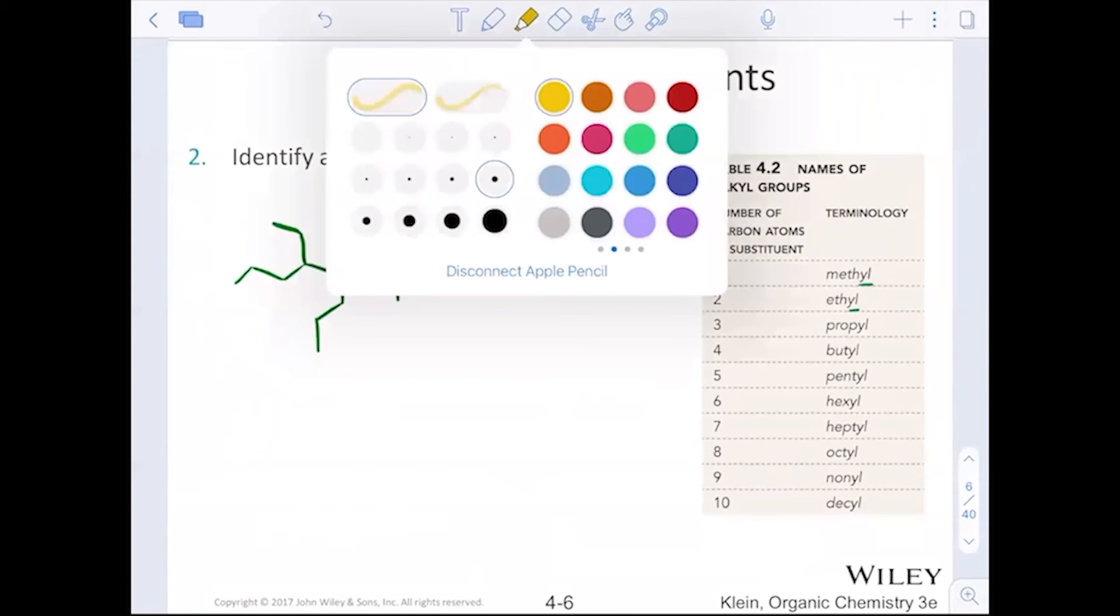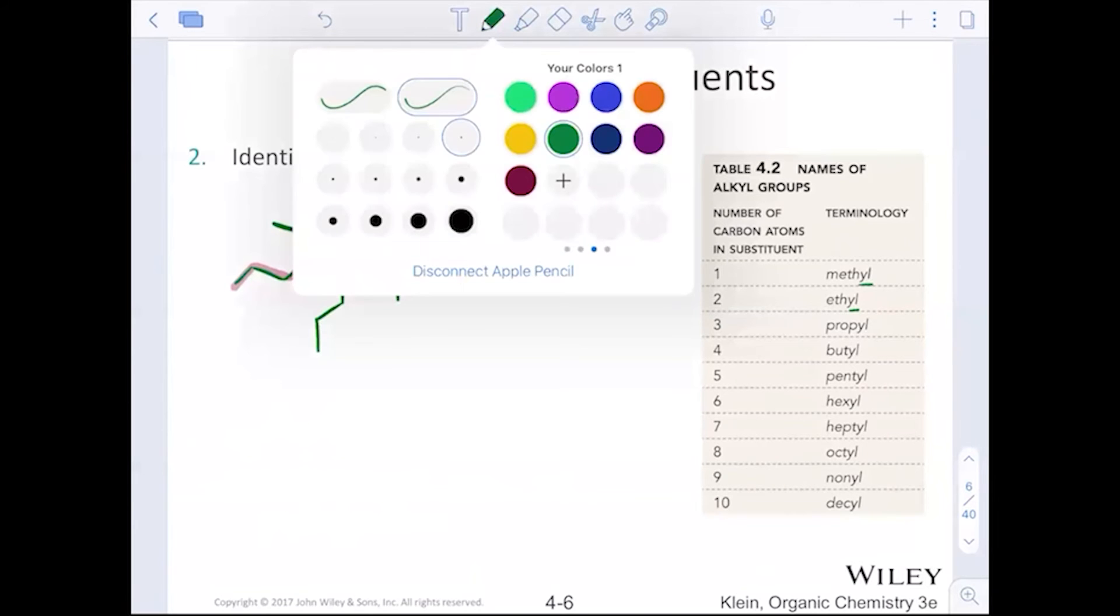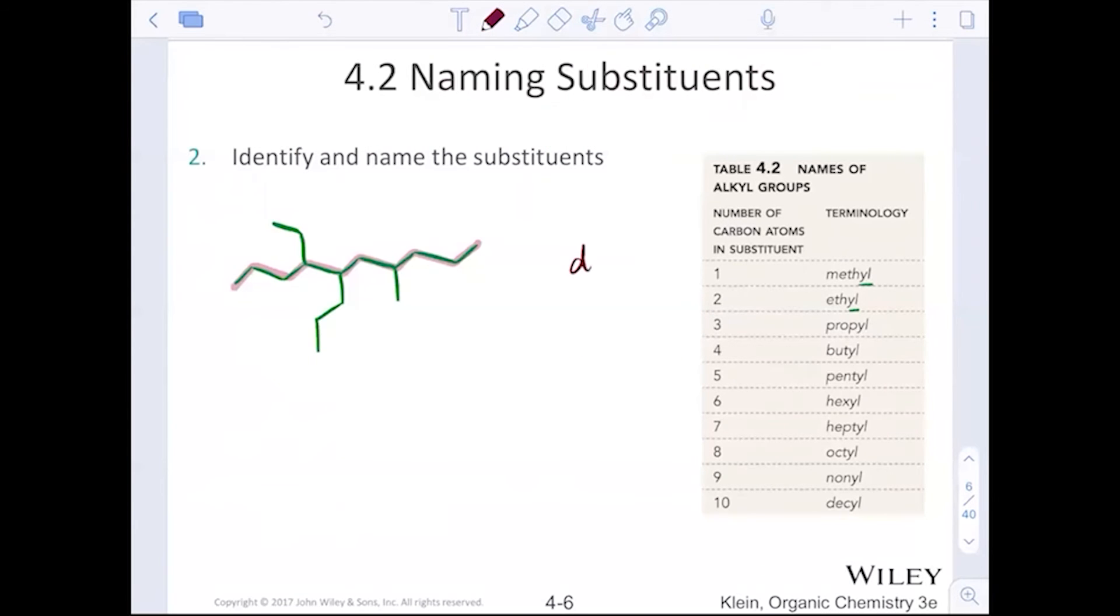So let me number or highlight my parent chain. One, two, three, four, five, six, seven, eight, nine, ten. Parent name decane. That's my parent.